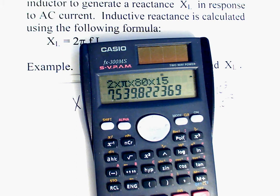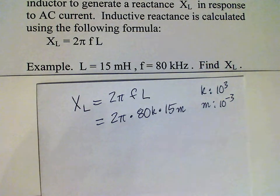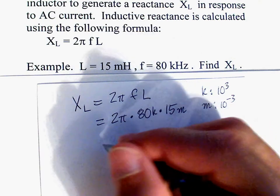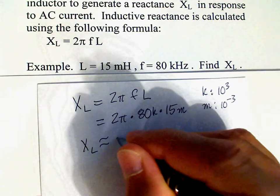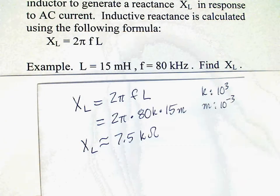And the answer is about 7.5 kilo ohms, 7,500 ohms, so XL is approximately 7.5 kilo ohms.